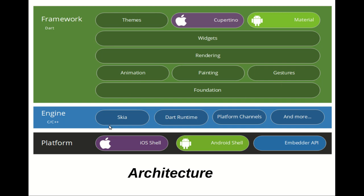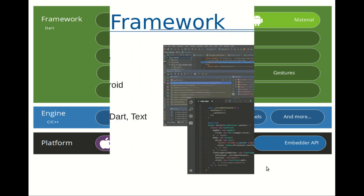The Flutter engine is written in C/C++ and provides low-level rendering support using Google's Skia graphics library. Skia is Google's graphics library that provides support for rendering low-level graphics. The engine is portable and helps host any Flutter application during runtime. Flutter supports hot reload, which allows refreshing the application during runtime. Different platform channels are provided: iOS shell and an embedded API. The platform provides a shell that hosts the Dart virtual machine.